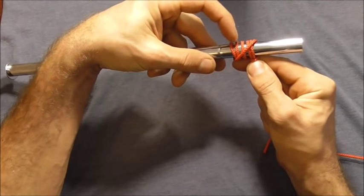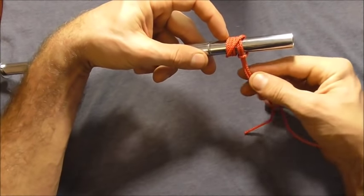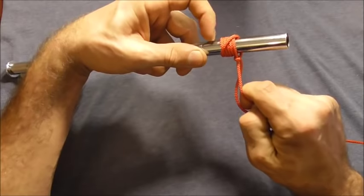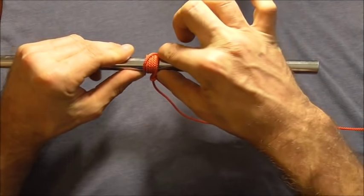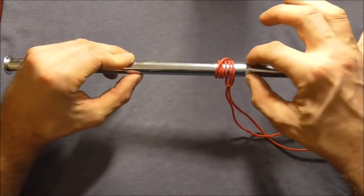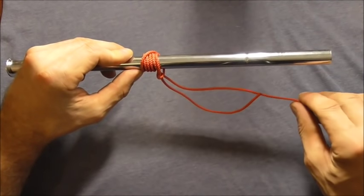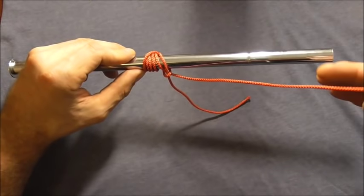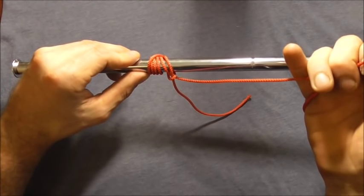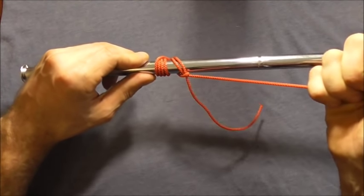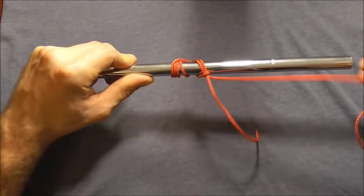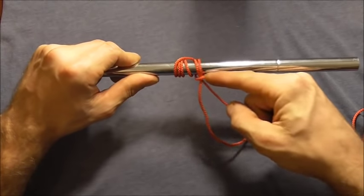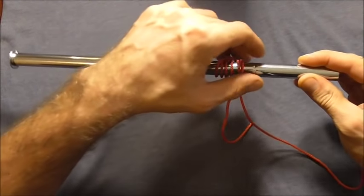Again keeping these coils here nice and parallel we just want to tighten that up and then we're free to move this knot up and down just by pushing on either side of the knot but when we want it to grip we just need to apply load to this working end here and the knot will grip in place and then after we've released the load this knot is free to move again.